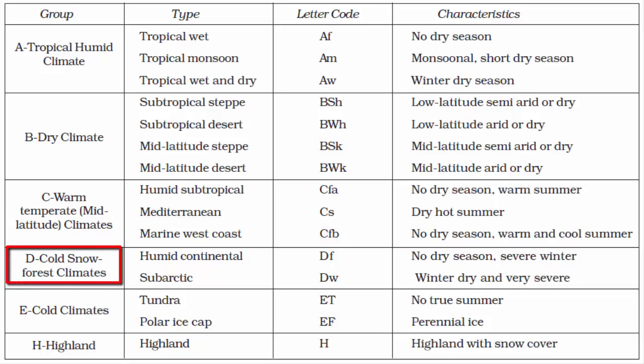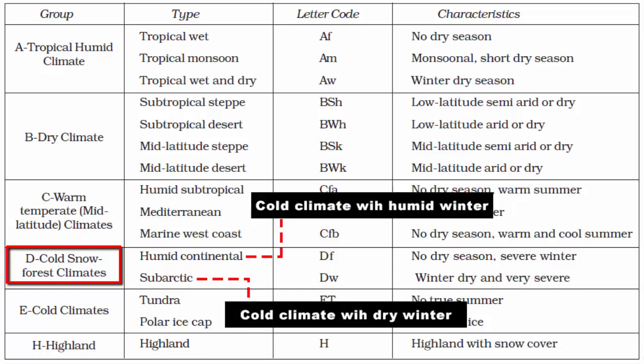In this video, we will learn about Group D of Köppen Climatic Classification. Group D stands for Cold Snow Forest Climate. It is further divided into two types. One is Cold Climate with Humid Winter, also called Humid Continental Climate, represented by capital letter D and small letter F.